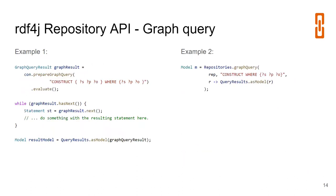The other kind of query is a Graph Query, used for SPARQL CONSTRUCT or DESCRIBE — queries that return an RDF graph. Here we prepare a CONSTRUCT query like 'CONSTRUCT {?s ?p ?o} WHERE {?s ?p ?o}' to get all triples. We evaluate it to get a GraphResult, which is an RDF graph we can iterate through to get individual Statements. We can also get the results as a Model and then do all the operations from the Model API such as filtering.